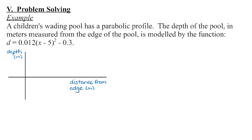The x-coordinate is going to be positive 5 — remember it's always the opposite sign when we're in brackets. The y-coordinate is going to be negative 0.3. I'm going to go ahead and plot that point on my sketch. This is not drawn to scale; it's just a rough approximation so I can see what's happening.